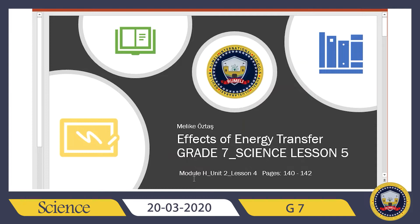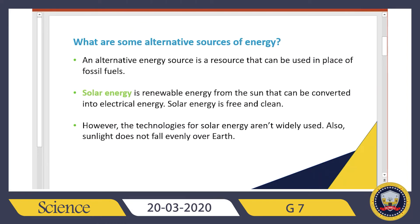So today we are going to talk about alternative energy resources. If you want to follow along from your book, please open Module H, Lesson 4, pages 140 to 142. An alternative source is a resource that can be used instead of fossil fuels. We have multiple different types, each with their own advantages and disadvantages — some are easy to use, but some are hard to get.